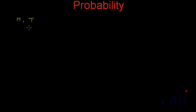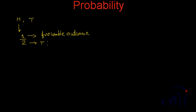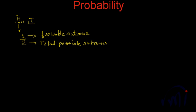Suppose if I toss a coin, the coin has heads and tails. These are the two events which can happen when you toss a coin. So the probability of getting heads is actually 1 out of 2. This is the favorable outcome and this is the total possible outcomes. When we toss a coin there are two possible outcomes — one is heads and another one is tails. But if we are looking for heads, the total favorable outcome becomes 1. This 1 is the favorable outcome out of the two possible outcomes.